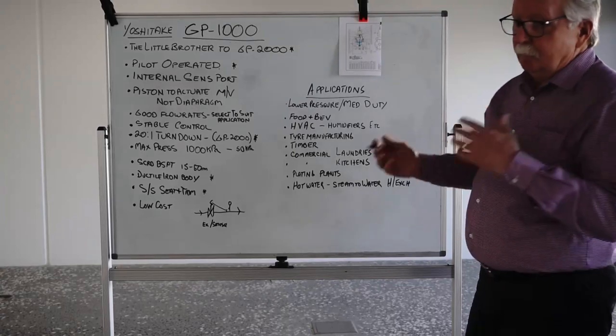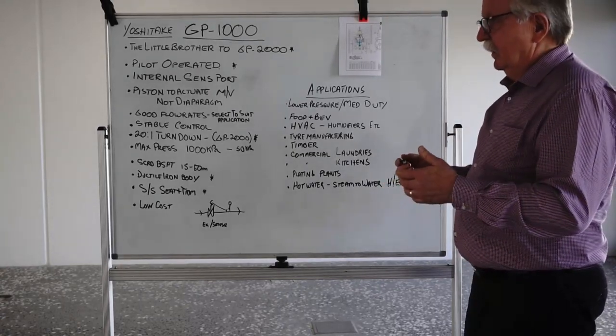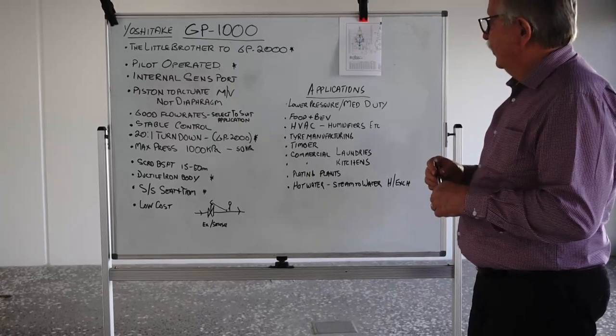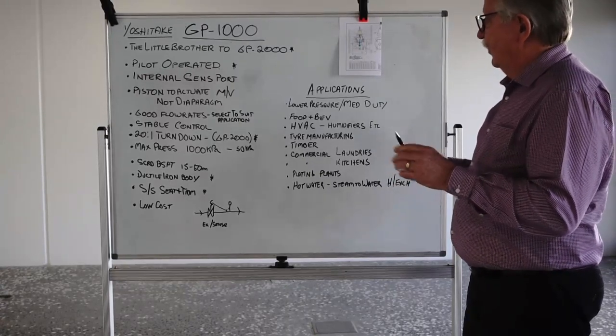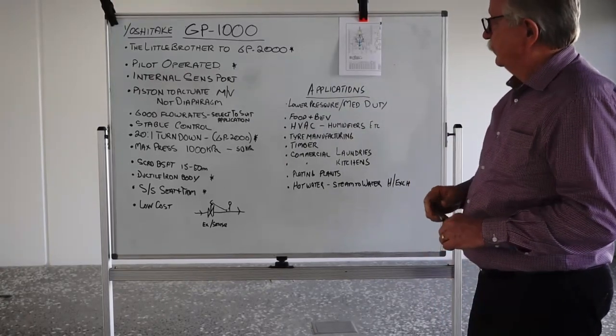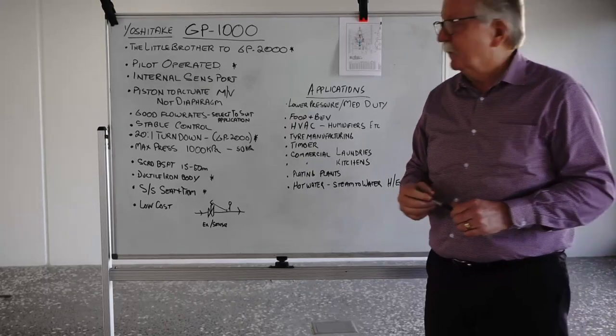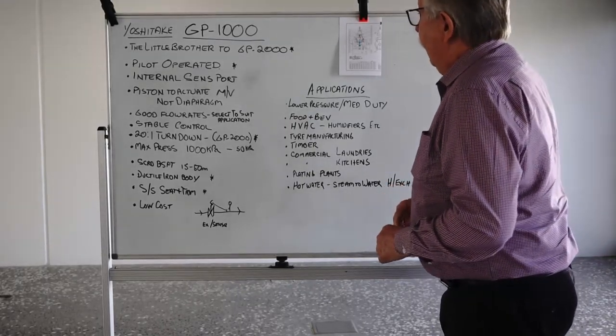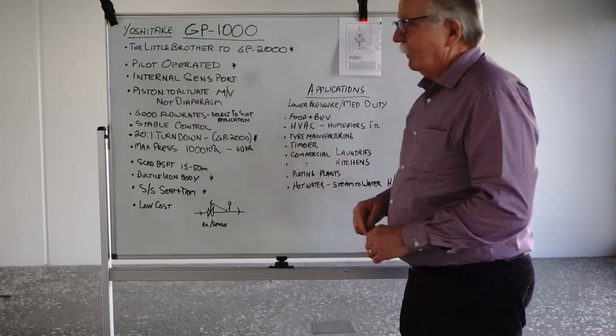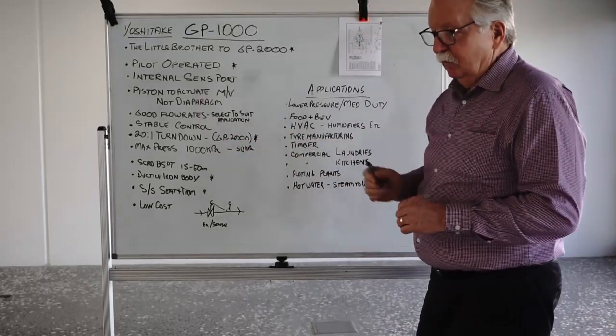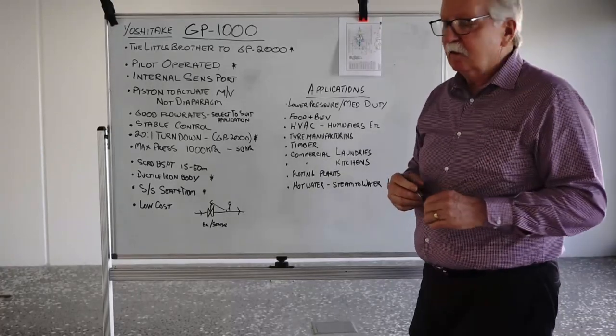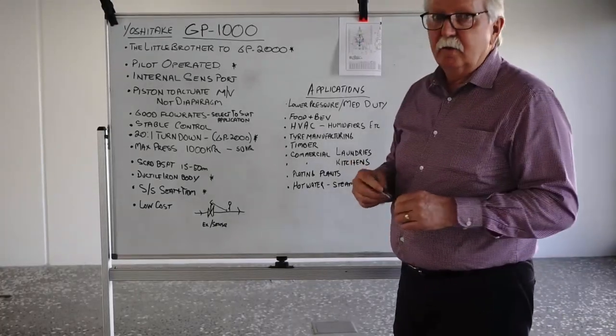Having said that, they have their applications and some capacities and some flow rates, some pressures, etc., just exceed the capability of the GP1000. In that case you would use a GP2000. They do have good flow rates though, as long as you do select them to suit your application properly. And you can do that with the sizing charts that are available on our website or give us a call and we can help you with that.